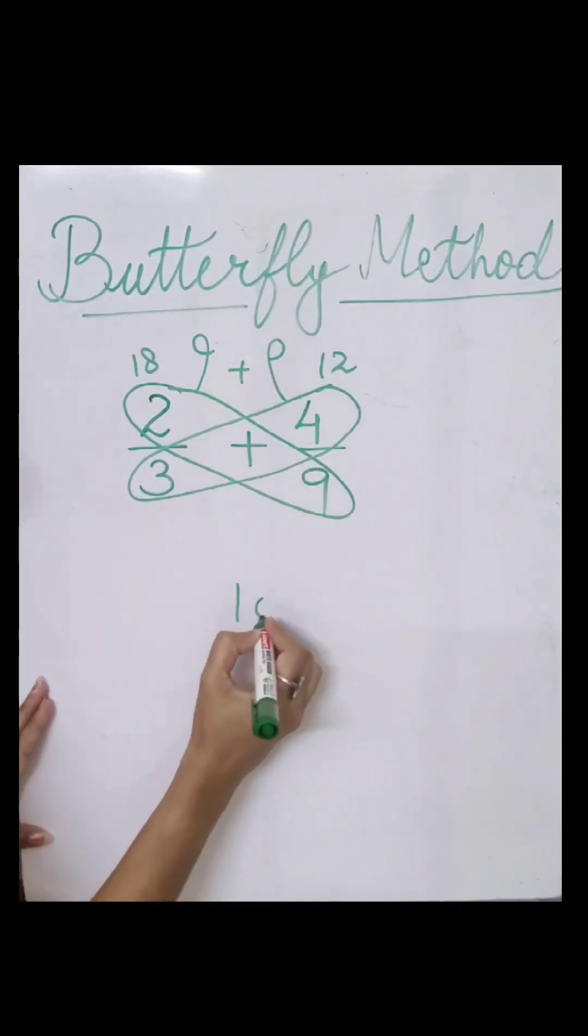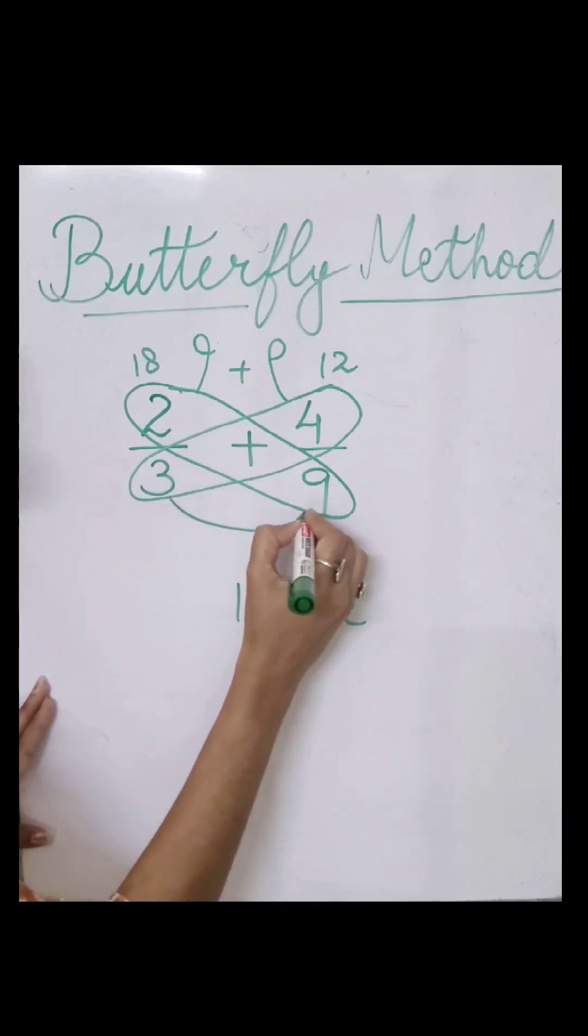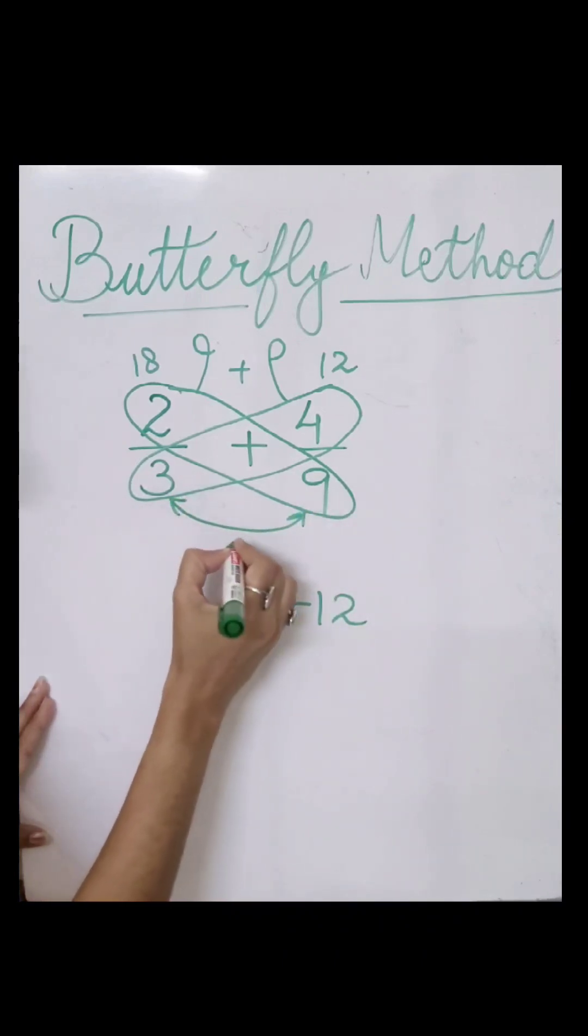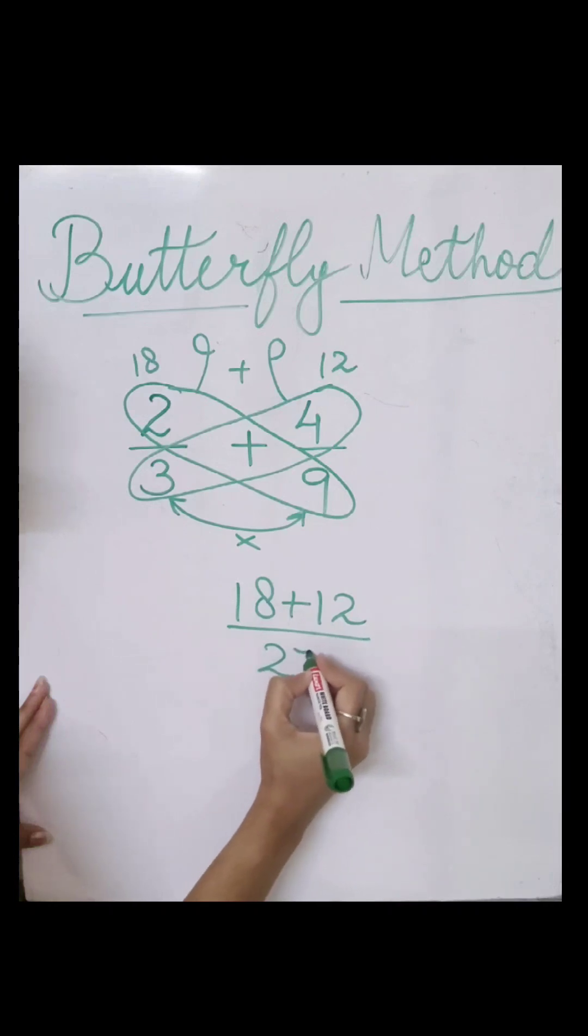So it becomes 18 plus 12. For the denominators 3 and 9, we simply multiply these two. Three times nine is 27.